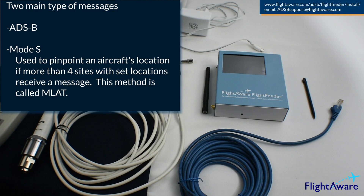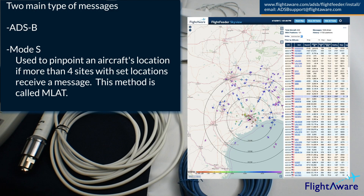If FlightAware is able to determine the aircraft's location using MLAT, a message will be sent back to the flight feeder and you will be able to view the aircraft on SkyView, which is a web portal showing a map of the current aircraft the flight feeder is receiving messages from. To view SkyView, navigate to the flight feeder's IP address in a browser, or a link can be found on the stats page.